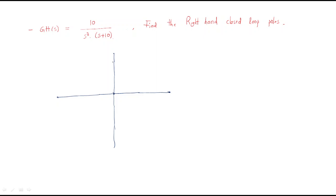The polar plot starts from -3φ (minus 3 phi) and ends at this point. This is the general polar plot shape. The replica of the Nyquist plot — the replica means the mirror image — flows in this manner.